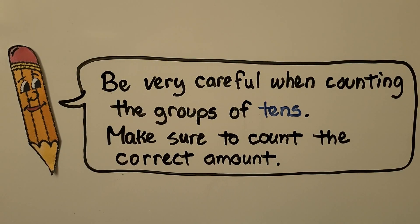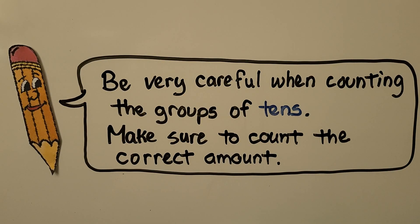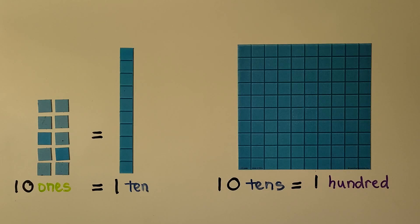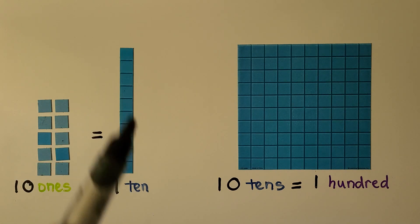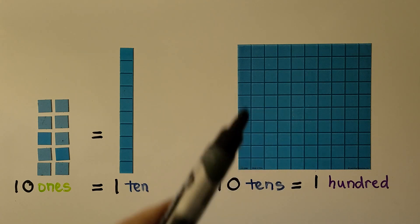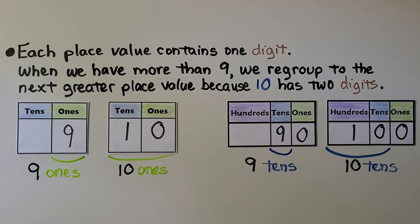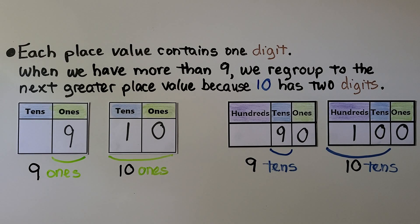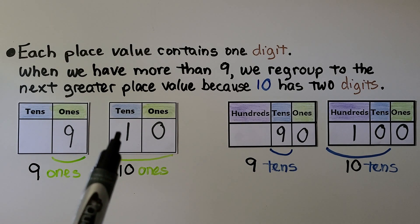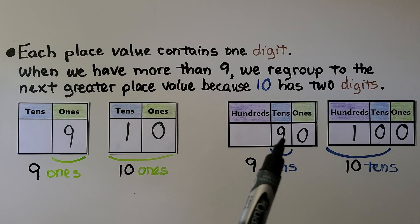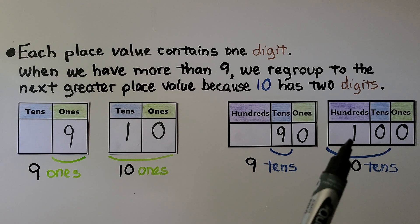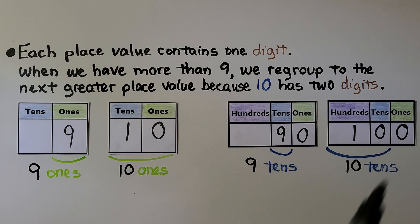We need to be very careful when counting the groups of tens and make sure to count the correct amount. 10 ones is equal to one 10, and 10 tens is equal to 100. Each place value contains one digit. When we have more than nine, we regroup to the next greater place value because 10 has two digits. If we have nine ones, we write a nine in the ones place. If we have 10 ones, we write a one in the tens place and a zero in the ones place. When we have nine tens, we write a nine in the tens place. When we have 10 tens, we put a one into the hundreds place, a zero in the tens place, and a zero in the ones place.